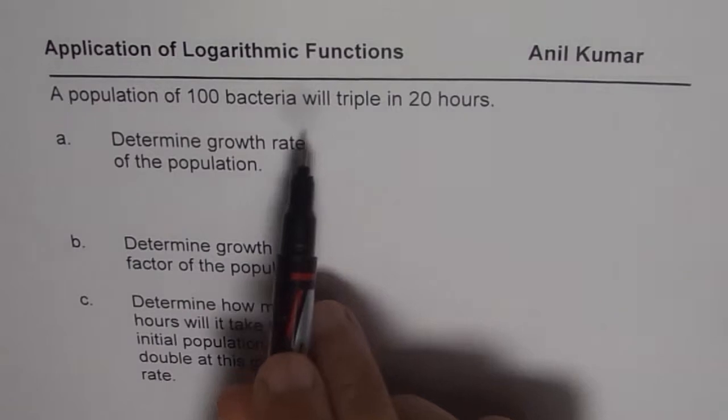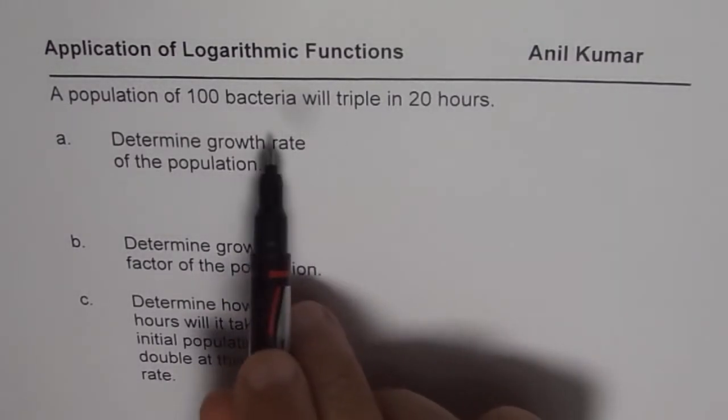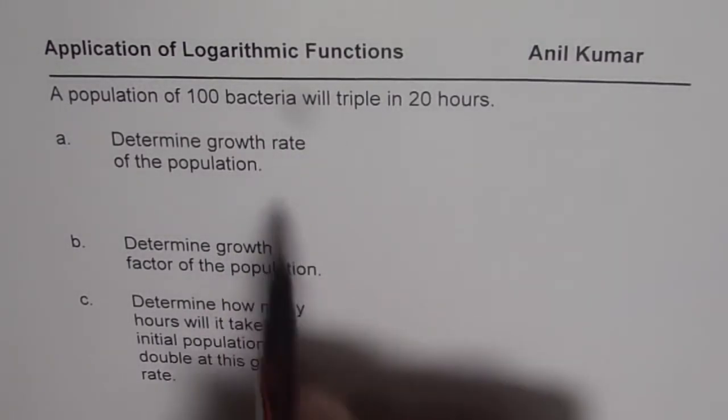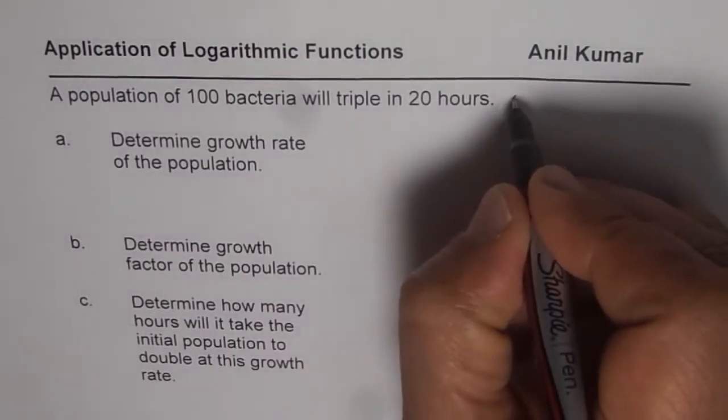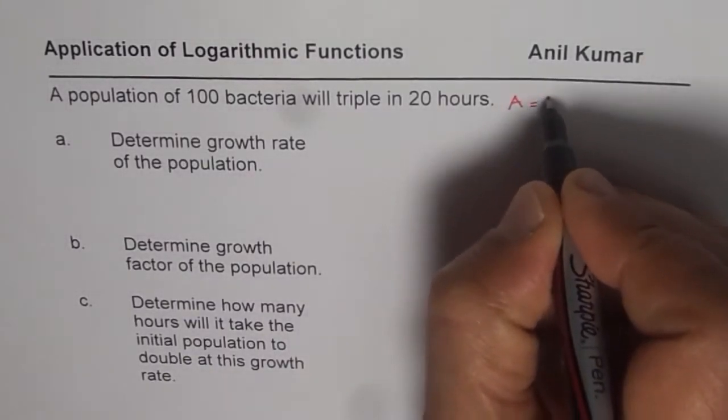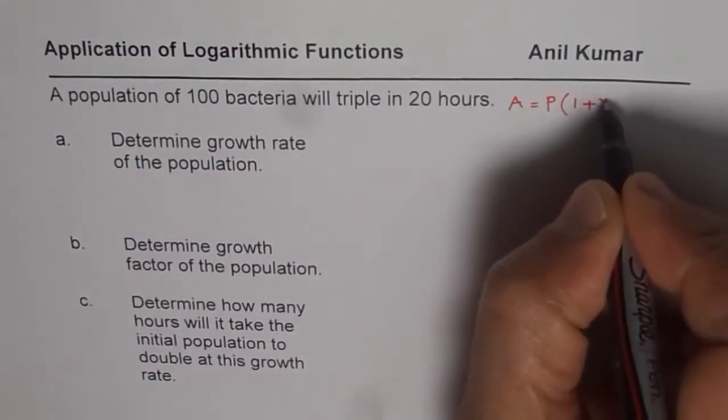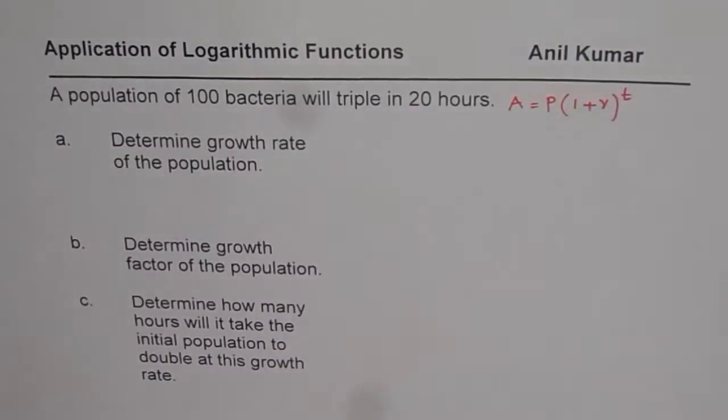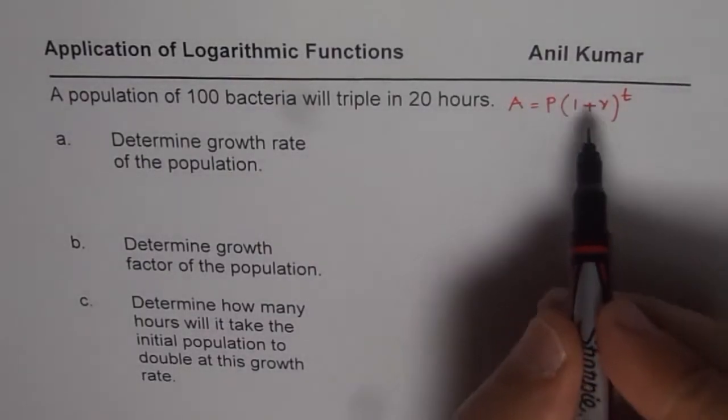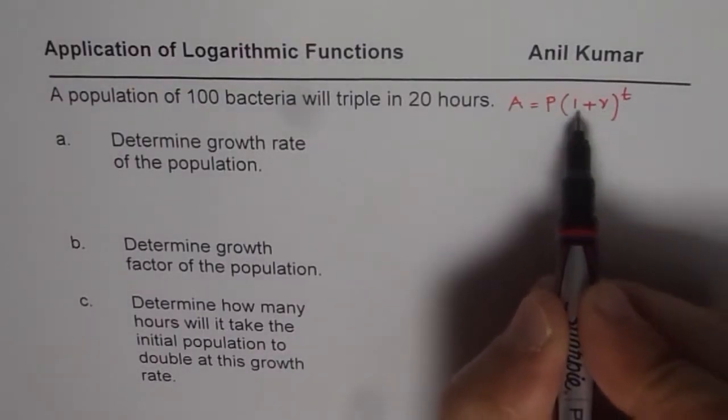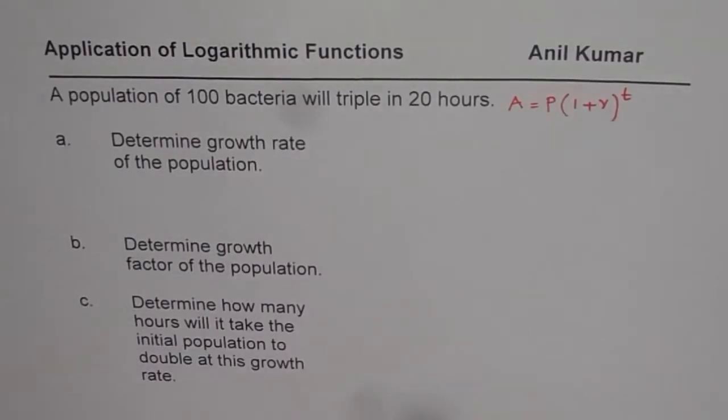So the exponential formula which relates the growth rate with the number of bacteria in population is A equals to the initial amount times 1 plus r to the power of t. It is kind of similar to the compounding investment formula. So in this, r is the growth rate and 1 plus r is the growth factor. That is what you need to understand.